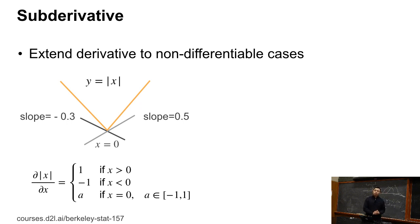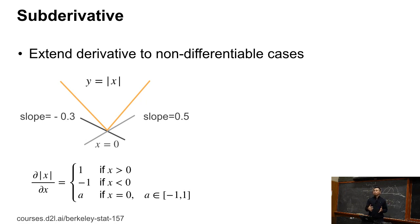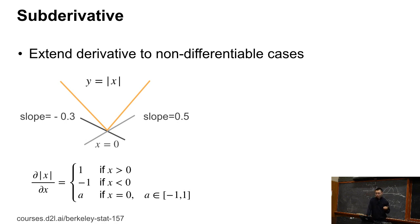Not every function is differentiable. The L1 norm is the absolute value of x. At x equals 0, it's not differentiable. We can draw every line under the curve, and the slope can be the sub-derivative — a generalized derivative concept, useful because many functions in deep learning are not differentiable. The sub-derivative of absolute value of x equals 1 if x is greater than 0, minus 1 if x is less than 0, and at x equal to 0, it can be any value between minus 1 and 1.